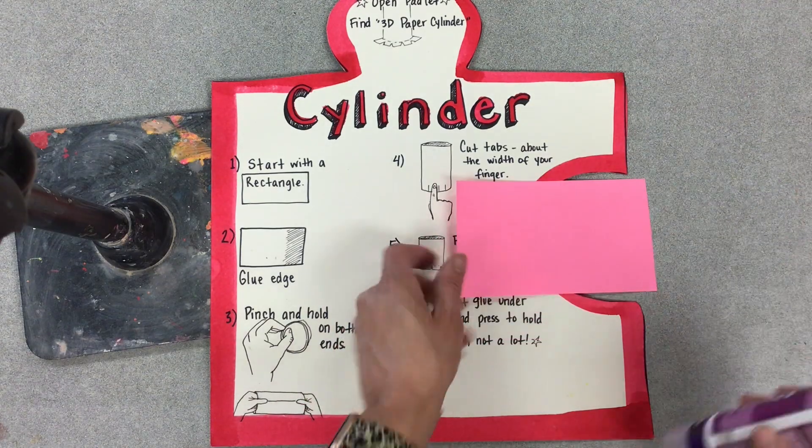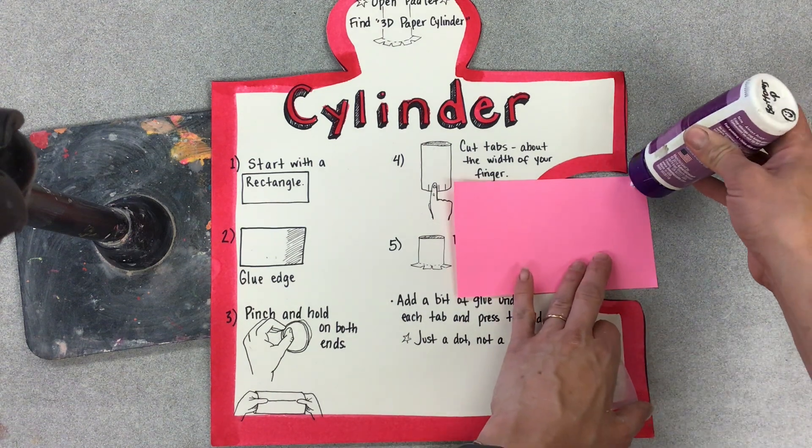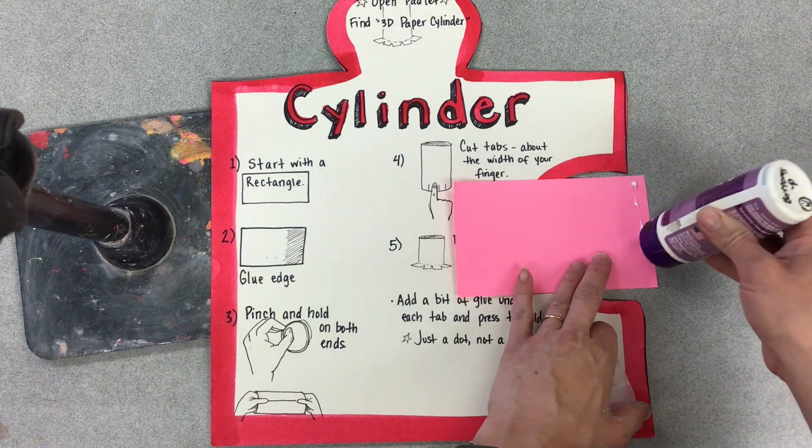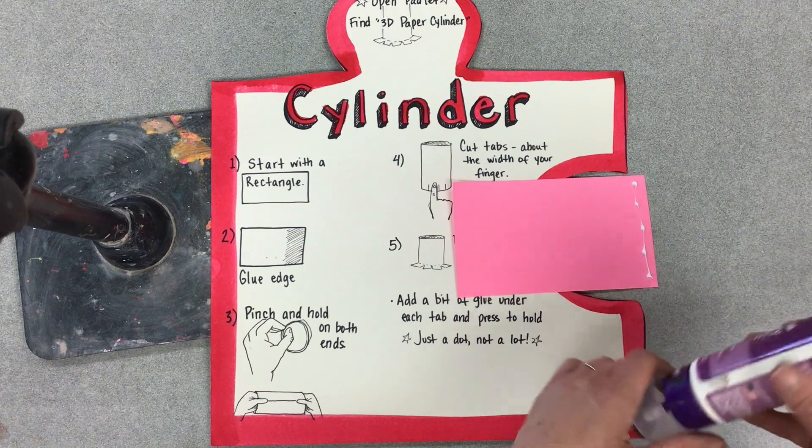Start with a rectangular piece of paper and glue the edge. Use a glue stick or dots of tacky glue. Just a dot, not a lot.